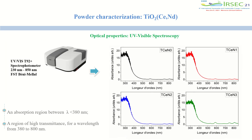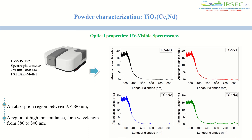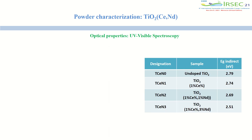The optical properties were observed by UV-visible spectrophotometer by recording the transmittance and absorption. The value of the calculated band gap using the Tauc formula has shown that it decreases with doping.